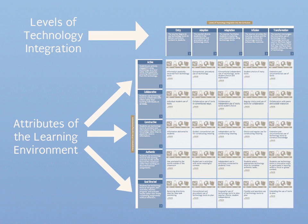That gives you a brief description of the levels of technology integration across the top of the TIM. These levels are similar to the levels described in the SAMR model. One difference is that in SAMR you have four levels and in the TIM you have five levels — we differentiate a little more at the upper end. The first three levels probably track closely with the first three levels of SAMR, and we have more differentiation at the top between infusion and transformation. The other key difference is that the TIM takes those levels and describes them across five attributes of meaningful learning environments.